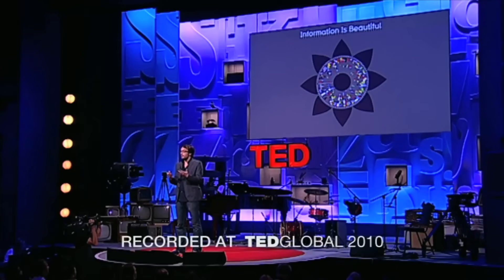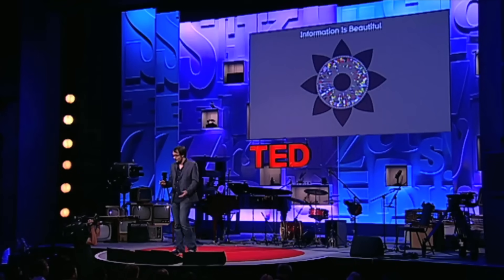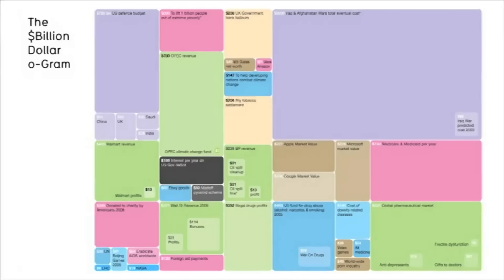Visualized information can just look really cool. This is the billion-dollar-a-gram, and this image arose out of frustration I had with the reporting of billion-dollar amounts in the press.